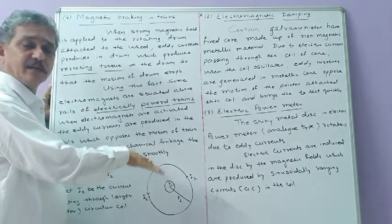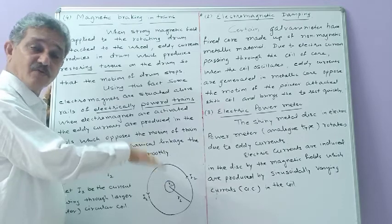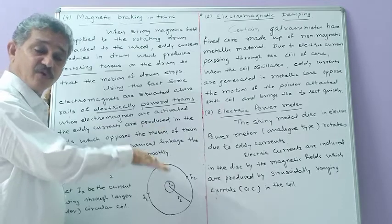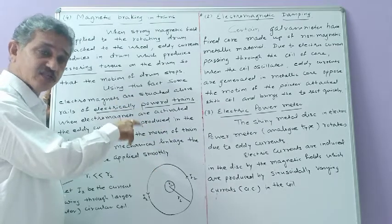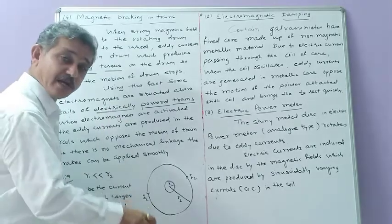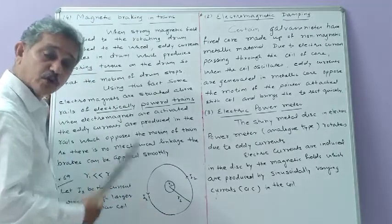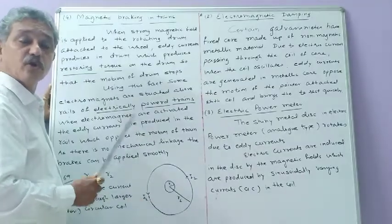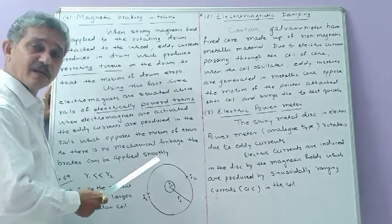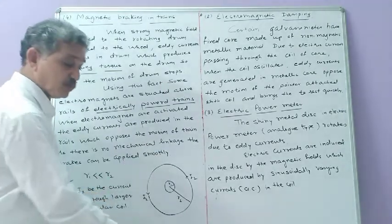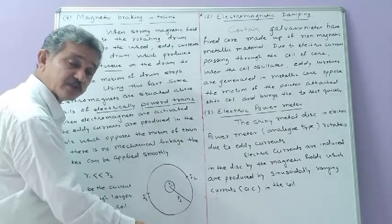When there is a change of magnetic field, magnetic flux changes and eddy currents are produced in the rails. Those eddy currents produce a restoring torque, and the train automatically and very smoothly comes to a state of rest.